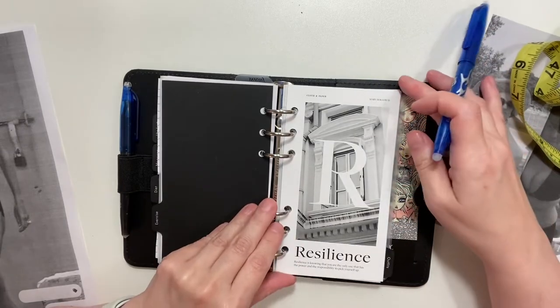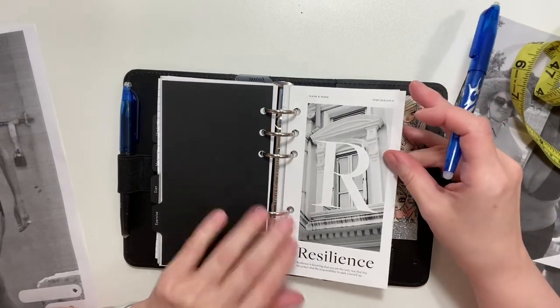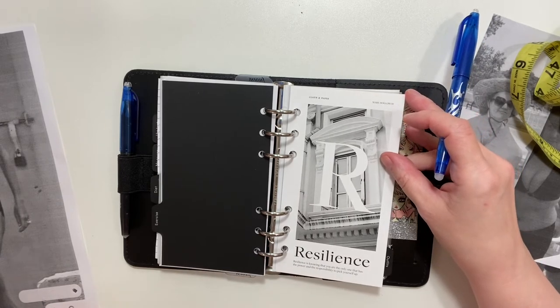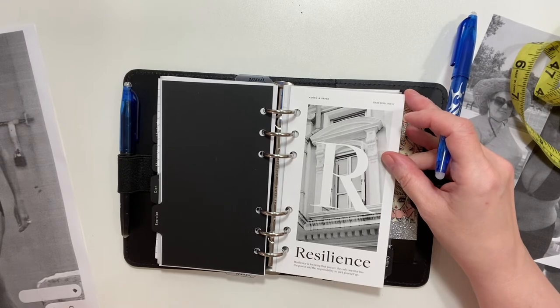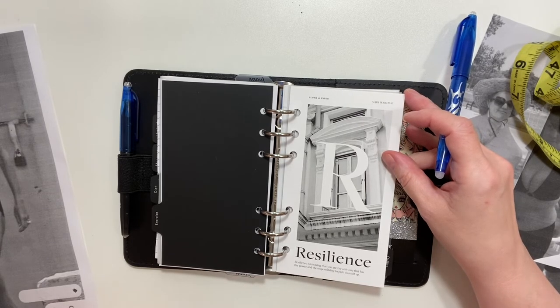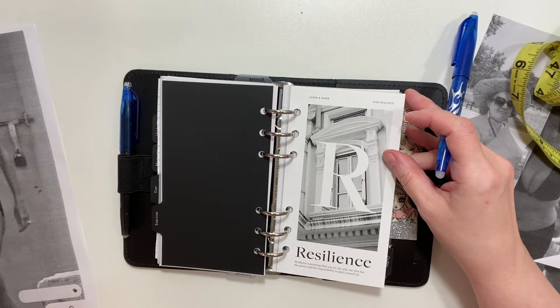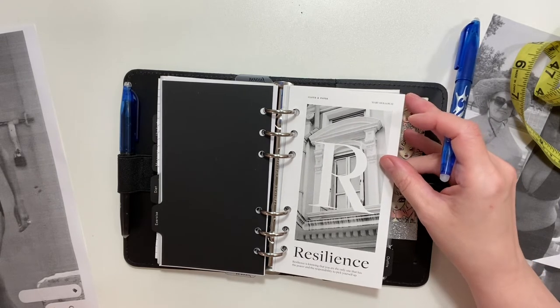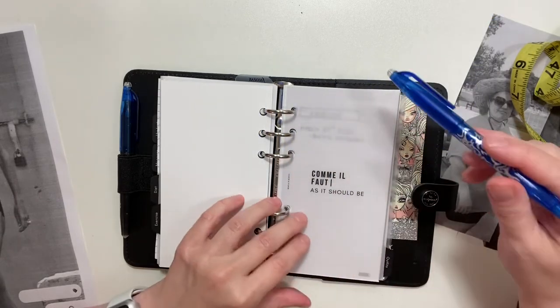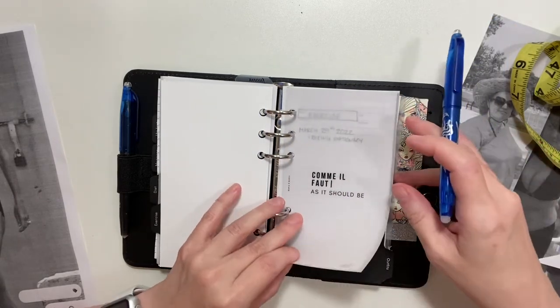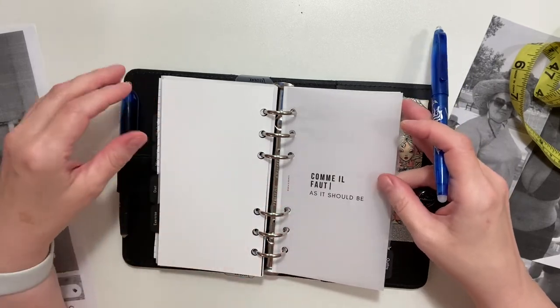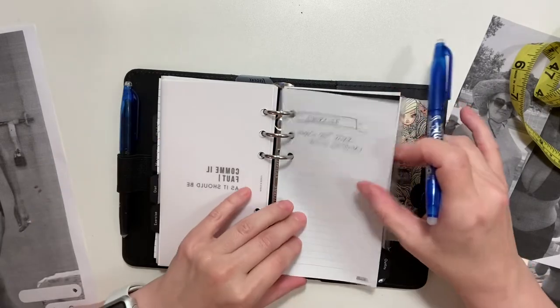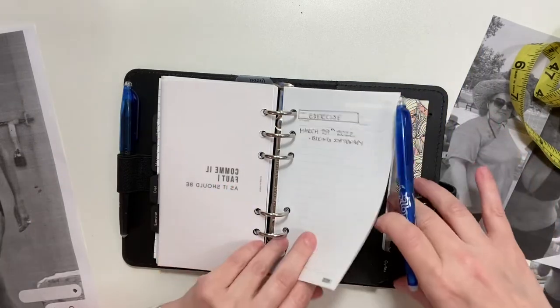And then for exercise, I put resilience. I'm going to get into exercising once I've lost 20 pounds, because the more you lose, the more you're on a momentum, and the more you want to exercise. Ideally I should go for a walk every day around the block, but I just don't have time. I'm busy with my MFA and teaching and whatnot. And then we have another Cloth and Paper dashboard, 'comme il faut,' as it should be. That's French for 'as it should be.'